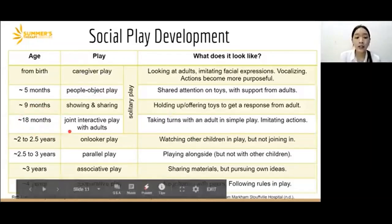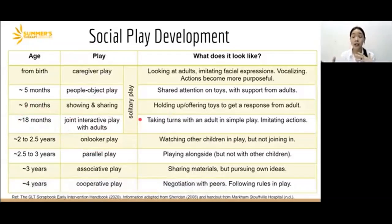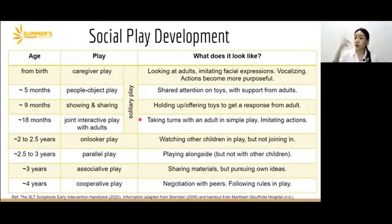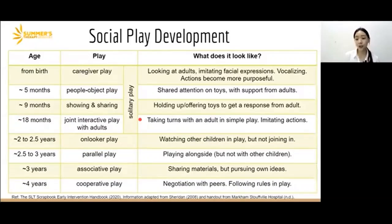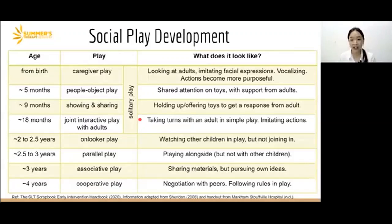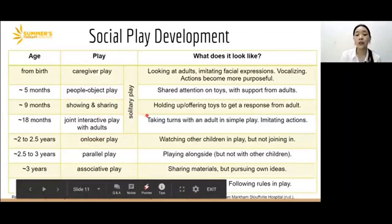At around 18 months, that's when they do joint interactive play with adults — they are developing turn-taking skills, taking turns with adults in simple play. For example, I roll the ball down, then they take their turn to roll it down. They might imitate actions — the parent claps and the child claps, the parent taps on the table and the child taps. The adult might model a sound like 'ah' and the child goes 'ah,' or different facial expressions. So that's a lot of imitation, turn-taking, and joint interactive play with adults.